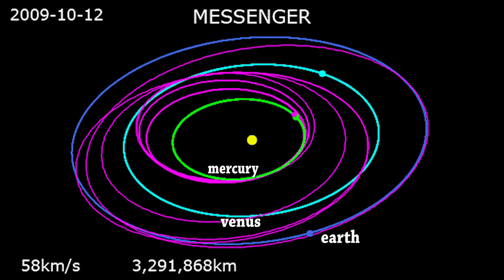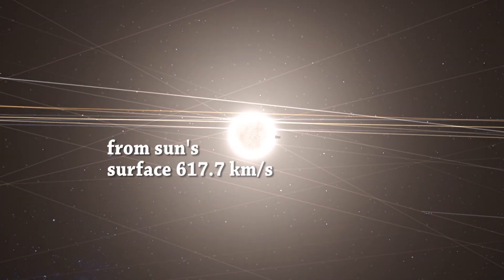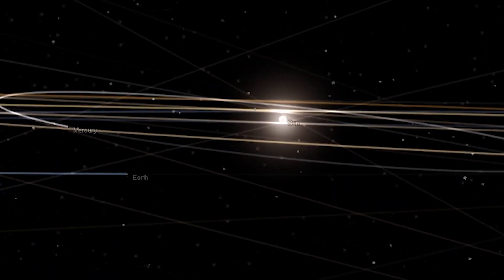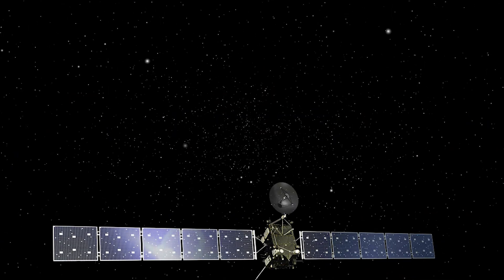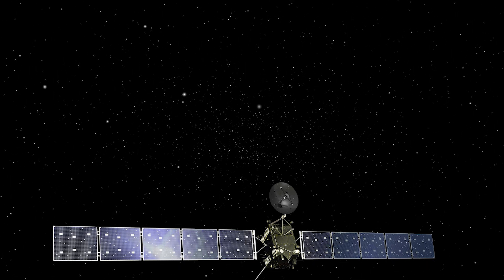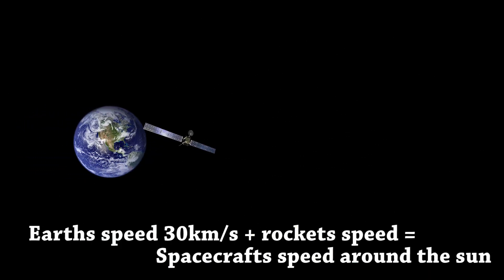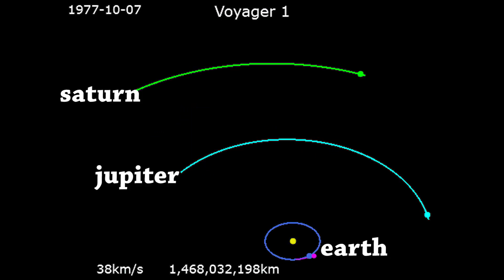The escape velocity of the sun itself is 607 kilometers per second from its surface, but as we move further away it decreases — at around Earth's orbit it's about 42.1 kilometers per second. When we get out of Earth's gravitational pull, we are moving around the sun at about 36 kilometers per second. This is because of our initial spacecraft velocity, slowed by Earth's gravity, combined with Earth's orbital velocity of 30 kilometers per second.